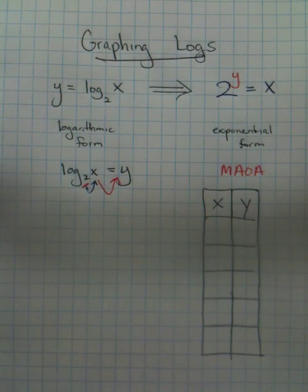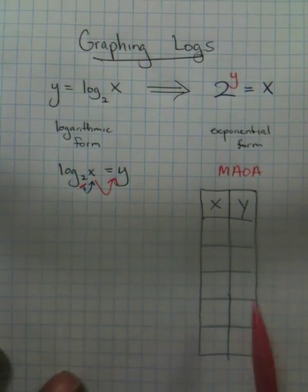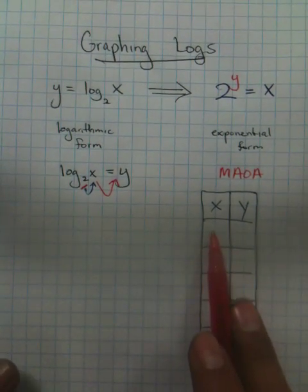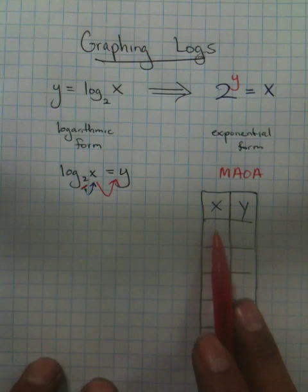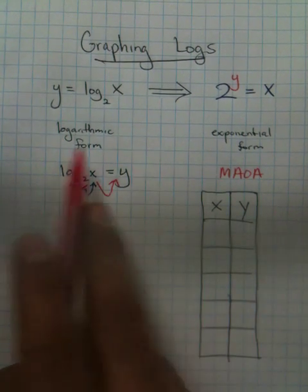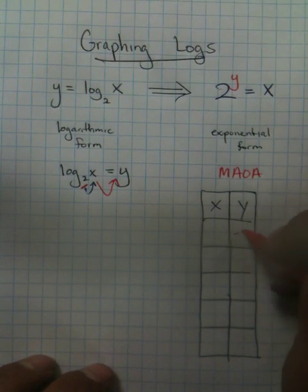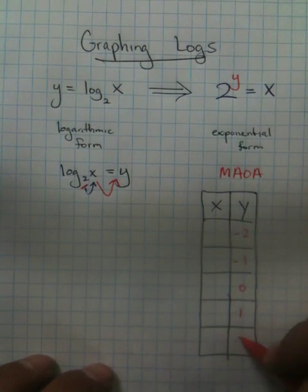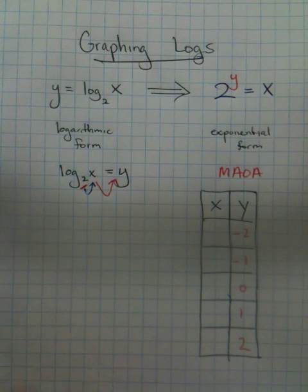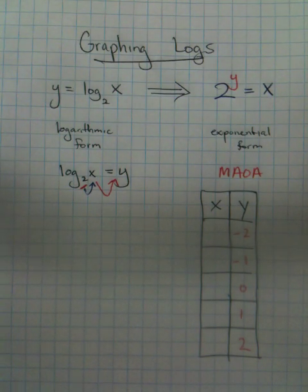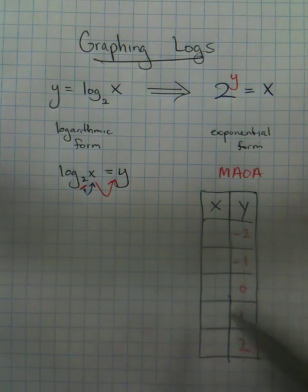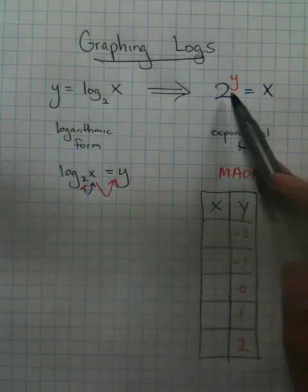Now what's different about Maoa is typically you'd start with the x. You say let's plug in x and we get y. Well because logarithms are an inverse of exponential function, Maoa says, why don't you use your outputs to find your inputs?